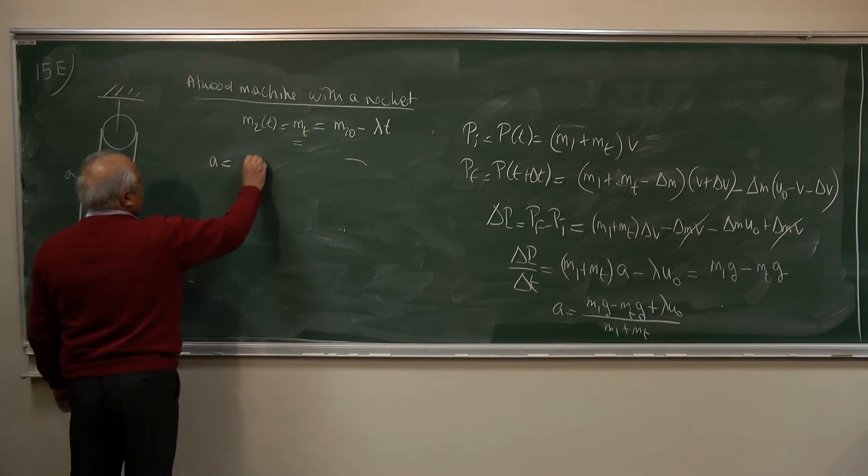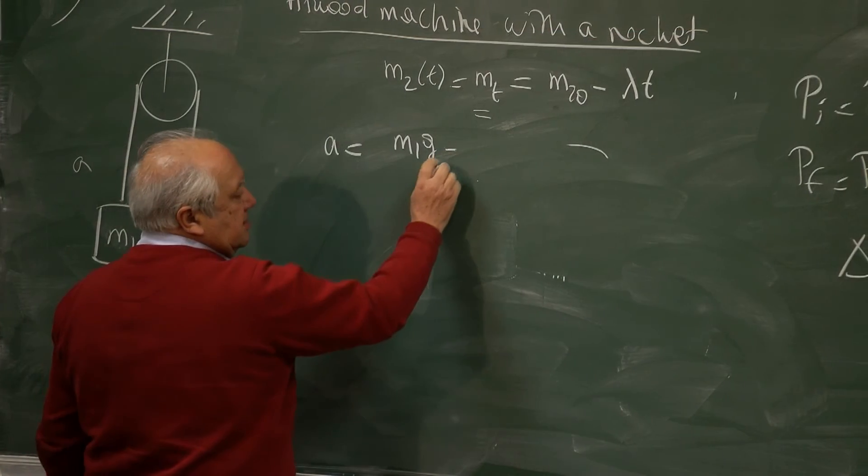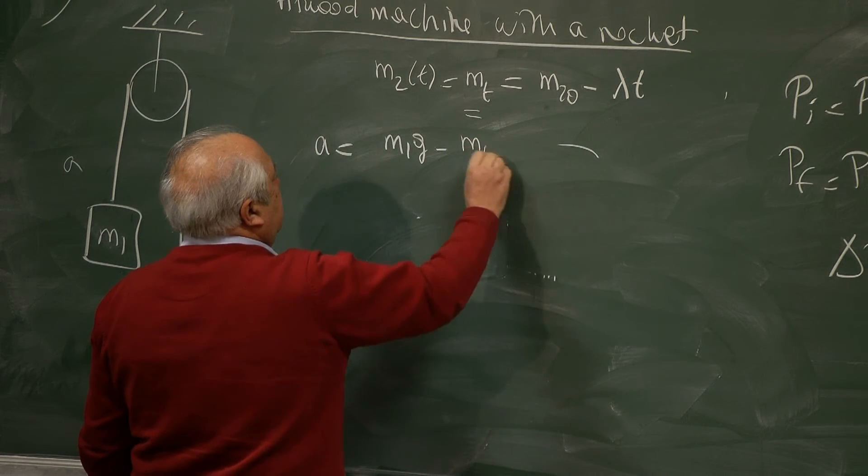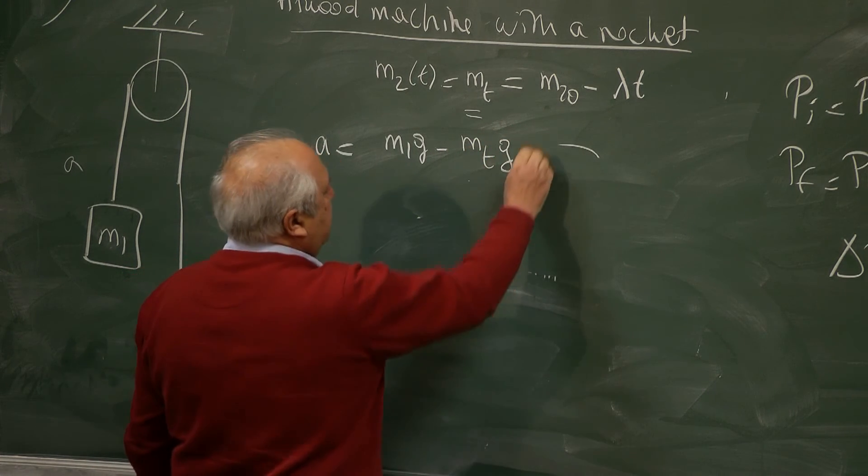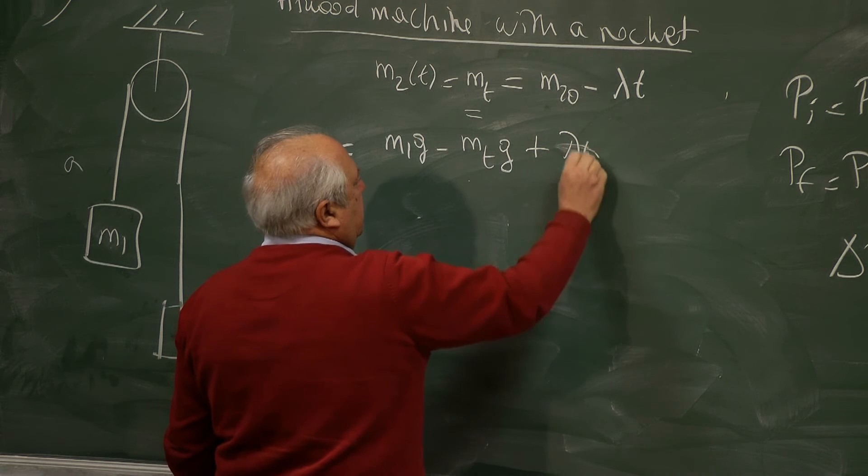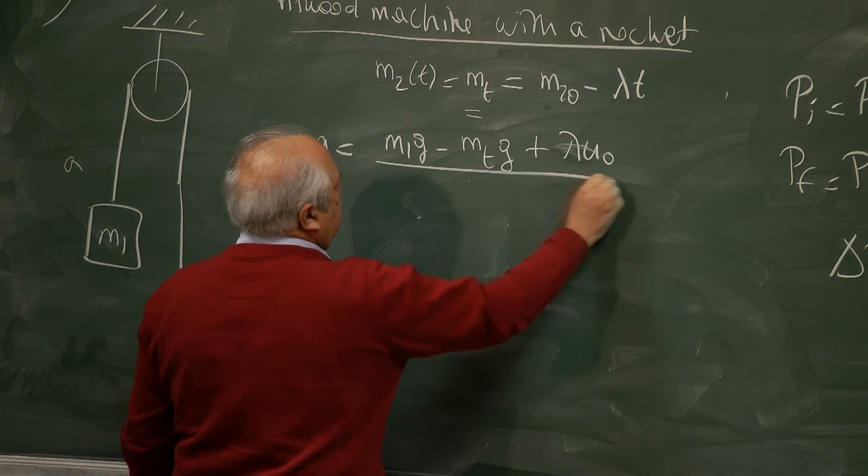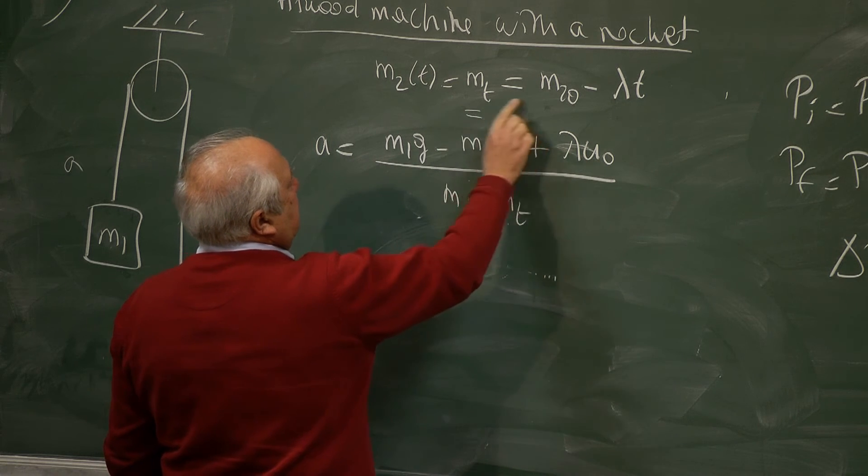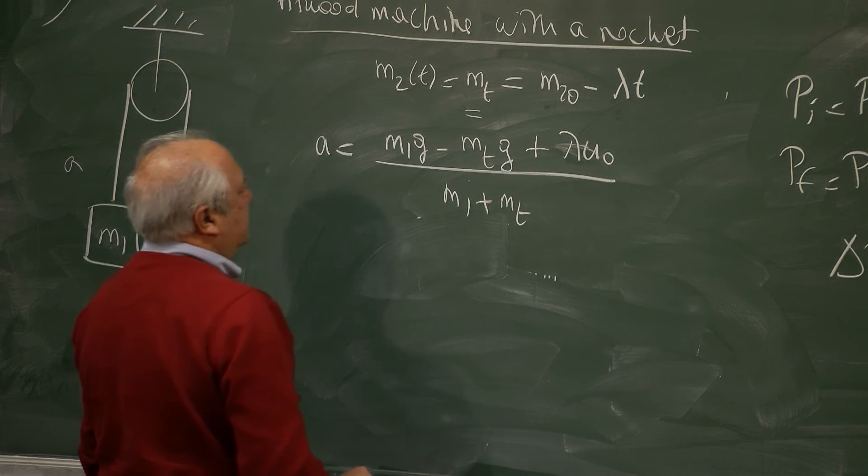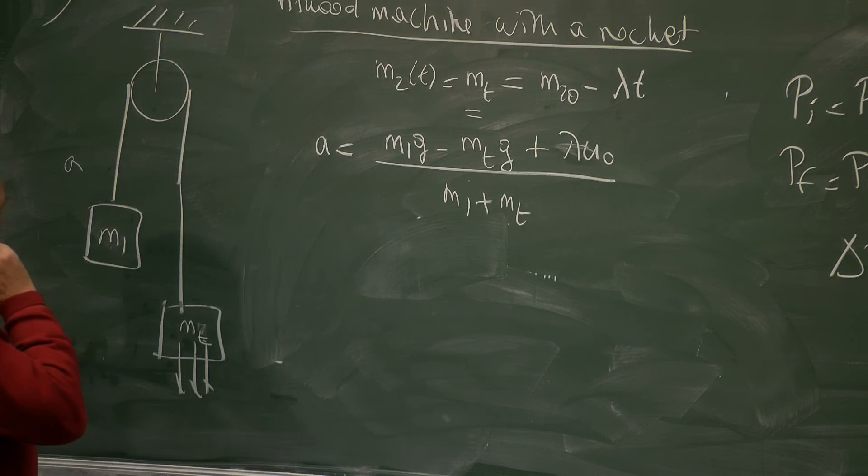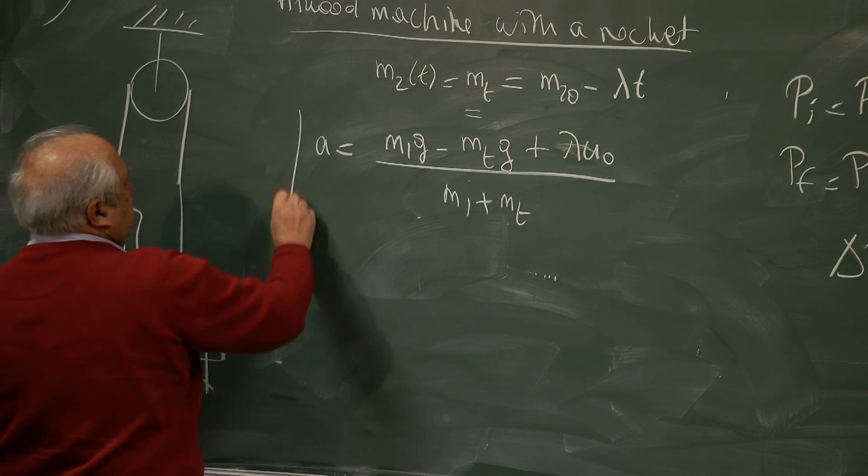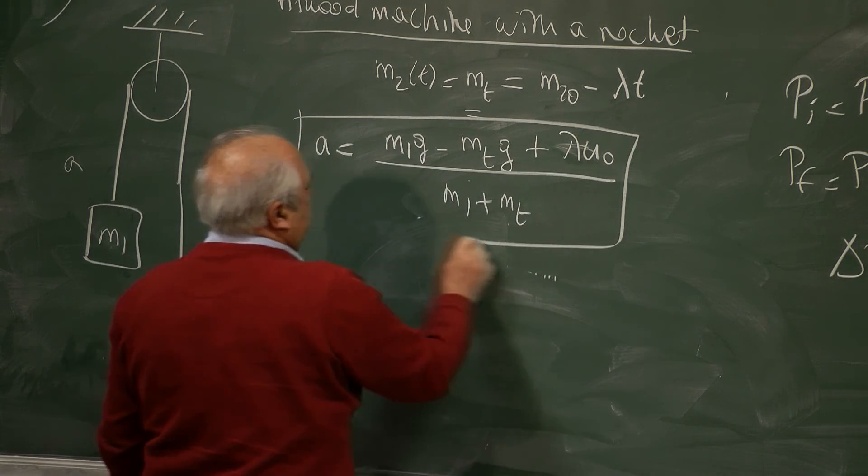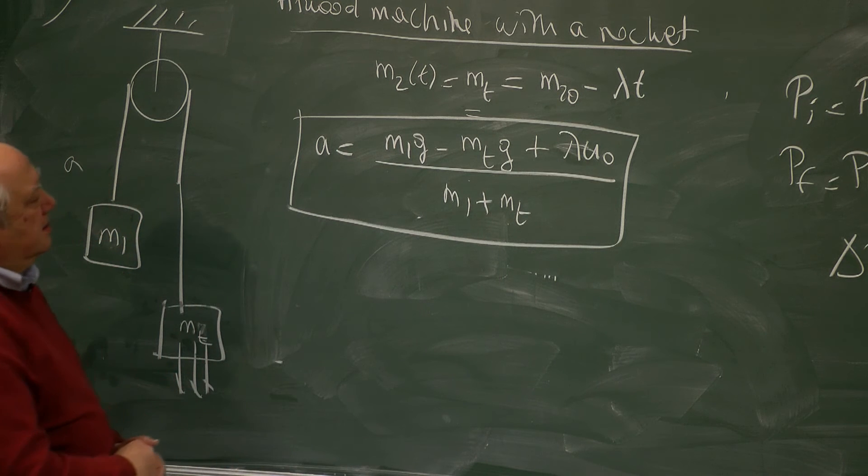A equals M1g minus MTg. I'm writing this again because we will play with this equation a little bit. Lambda U zero over M1 plus MT where MT is M2 zero minus lambda T. That's the result. This is the acceleration of the system.